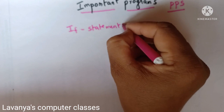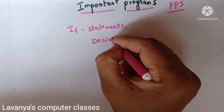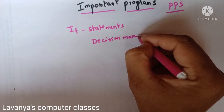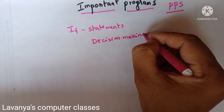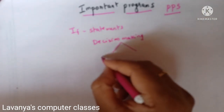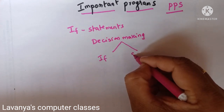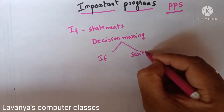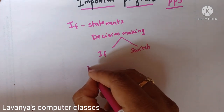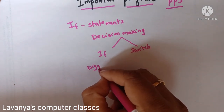First I will go over what are the important programs in the if statement. If statement is also known as a decision-making statement. In decision-making, there are two types: one is the if statements — if, if-else, else-if — or switch statement, which is a multi-conditional statement.